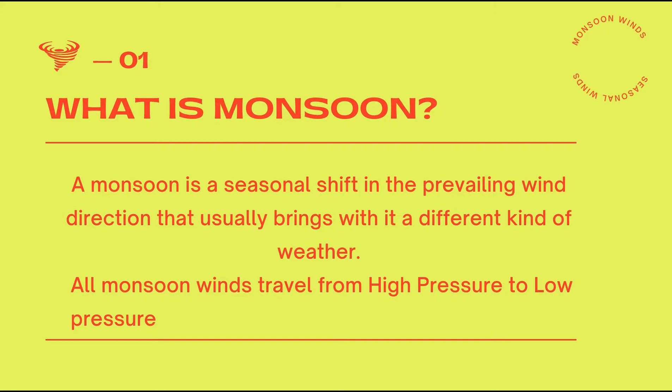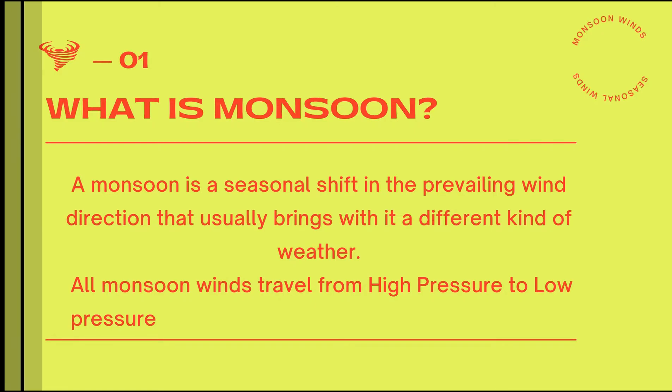Monsoons cause wet and dry seasons throughout much of the tropics. It usually happens in the region of South and Southeast Asia, blowing from the southwest between May and September and bringing rain — which is the wet monsoon — and from the northeast between October and April, which is the dry monsoon. All of these monsoon winds travel from high pressure to low pressure.